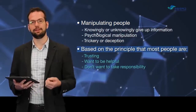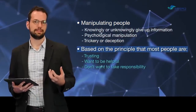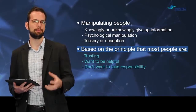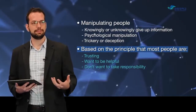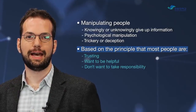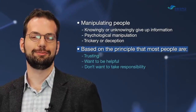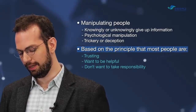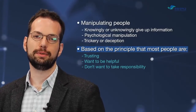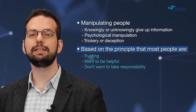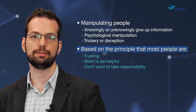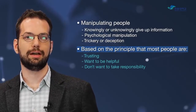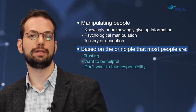Social engineering is based on the principle that most people are trusting and they want to be helpful. The average person you meet on the street wants to try to help people who are in need. Social engineers really take advantage of this ability of people to be helpful and to generally trust the overall population. They also take advantage of the fact that most people don't really want to take responsibility for certain situations, so whenever somebody sees something suspicious, unless their job is to stop that person, they don't really want to get involved.